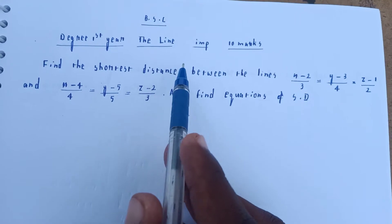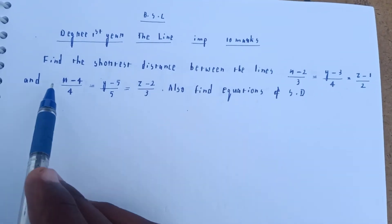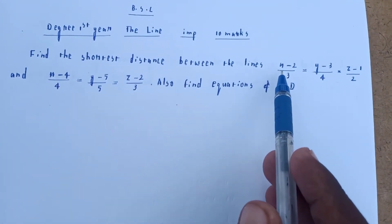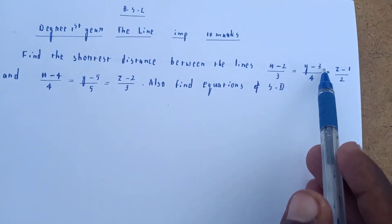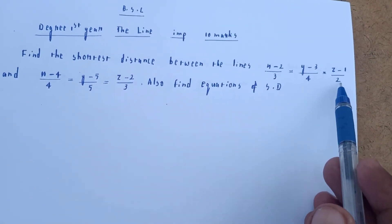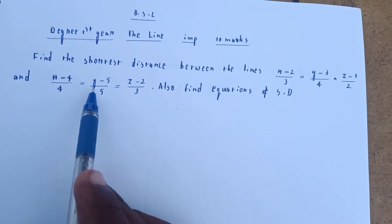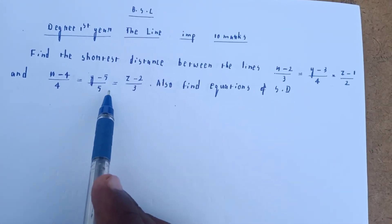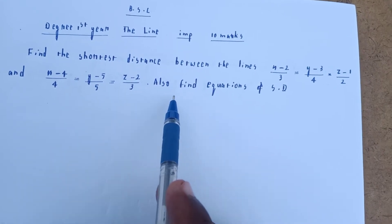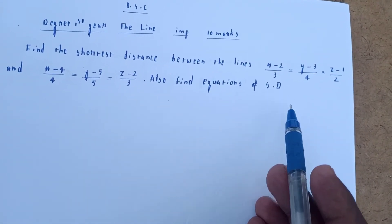Welcome to my channel. BSC, the line — an important ten marks problem. Find the shorter distance between the lines: (x−2)/3 = (y−3)/4 = (z−1)/2 and (x−4)/4 = (y−5)/5 = (z−2)/3, and also find the equations of the SD. SD means shorter distance.